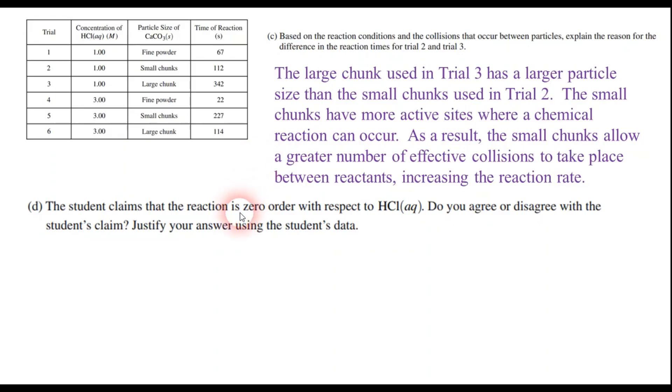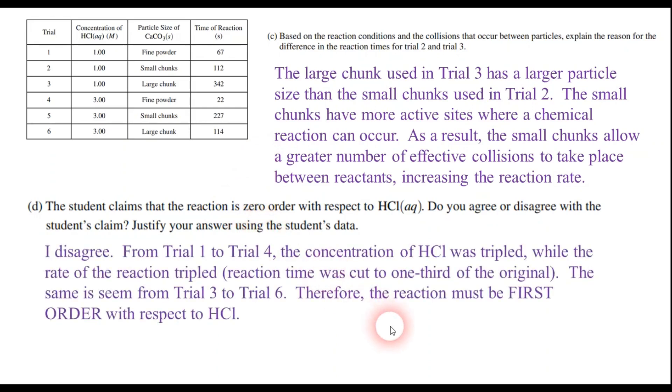Now part D, the student is claiming that the reaction is zero order with respect to HCl. Do you agree or disagree? A couple different ways to answer this. I would certainly disagree. And if it were zero order, then the rate of reaction for 1 molar versus 3 molar should be the same. But that's not the case. In fact, you might notice that if you go from trial 1 to trial 4, the concentration of the acid actually triples, and the time is cut into 1 third of what it was at the beginning. So that means that the rate actually triples.